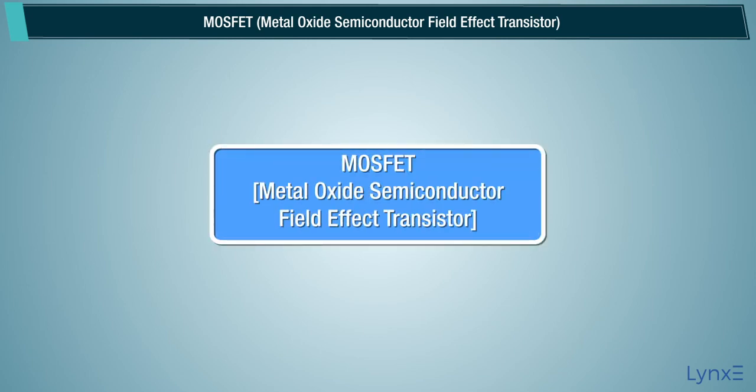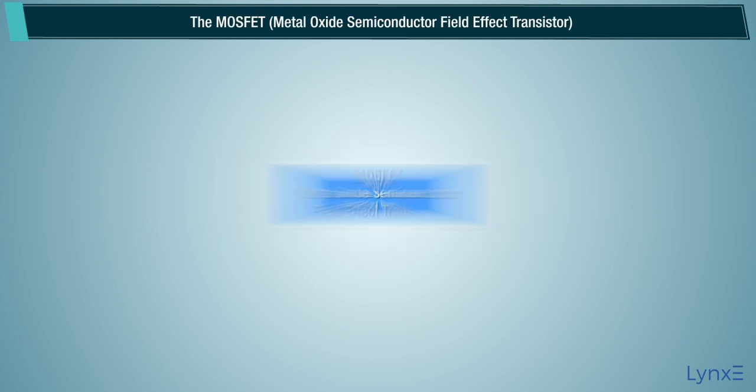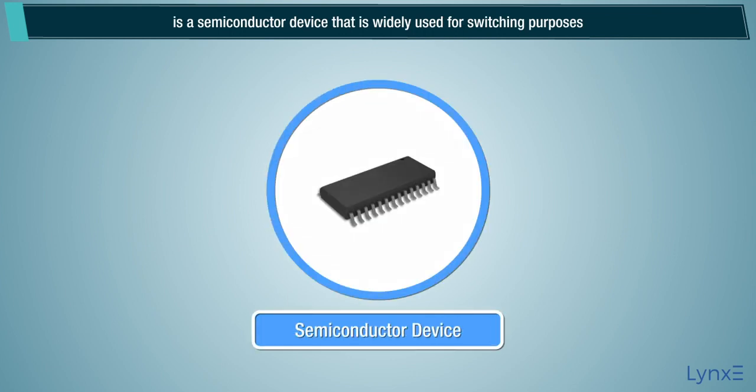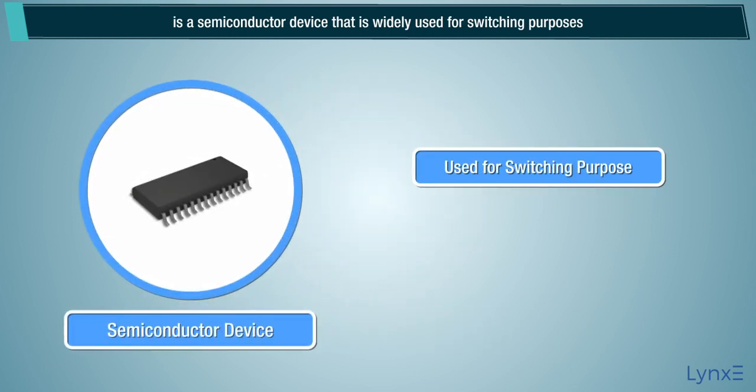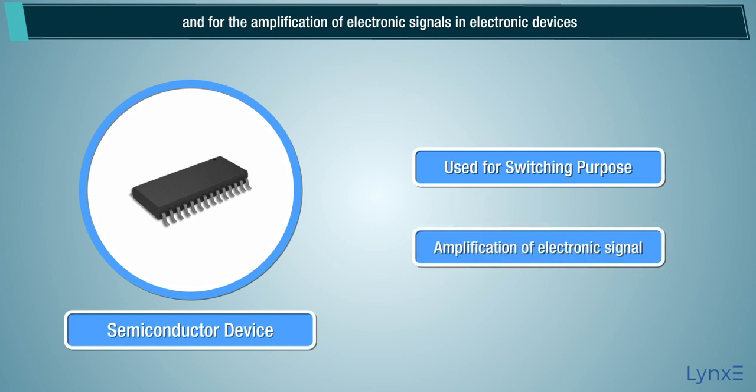MOSFET Metal Oxide Semiconductor Field Effect Transistor is a semiconductor device that is widely used for switching purposes and for the amplification of electronic signals in electronic devices.